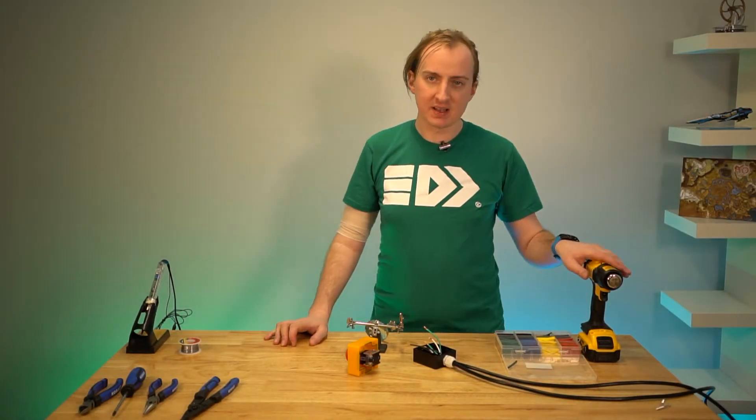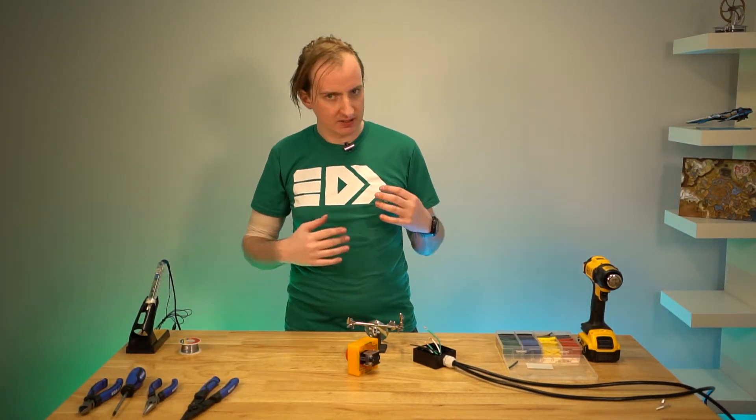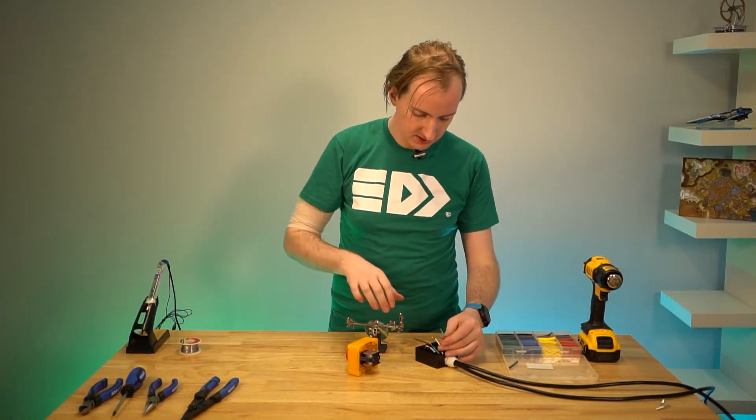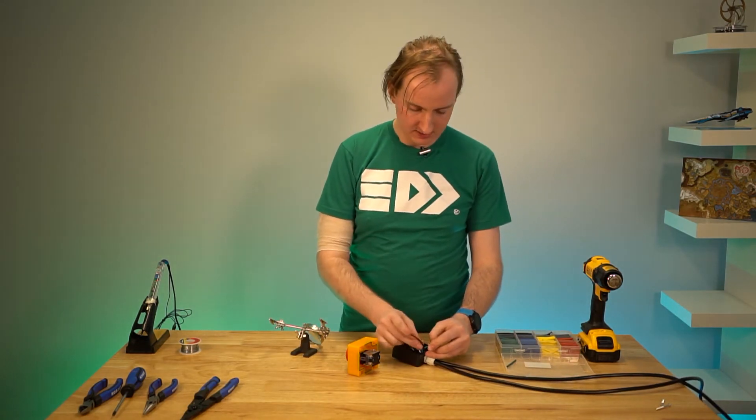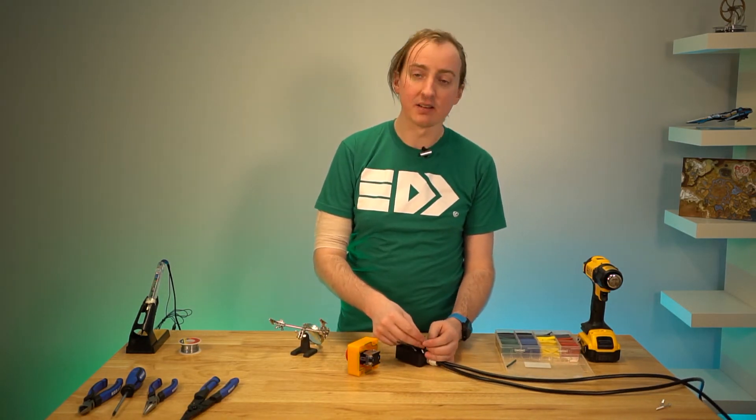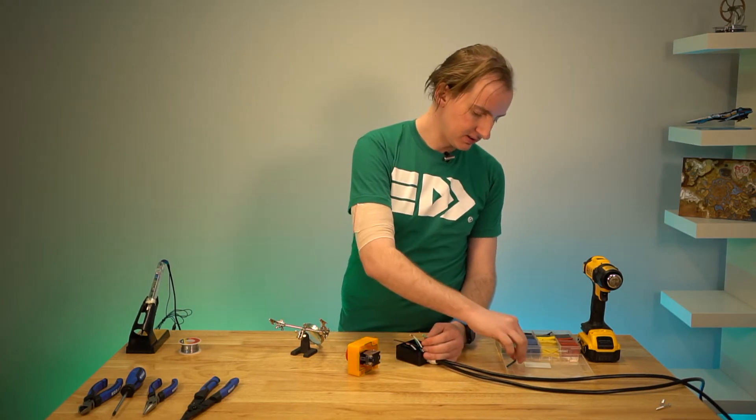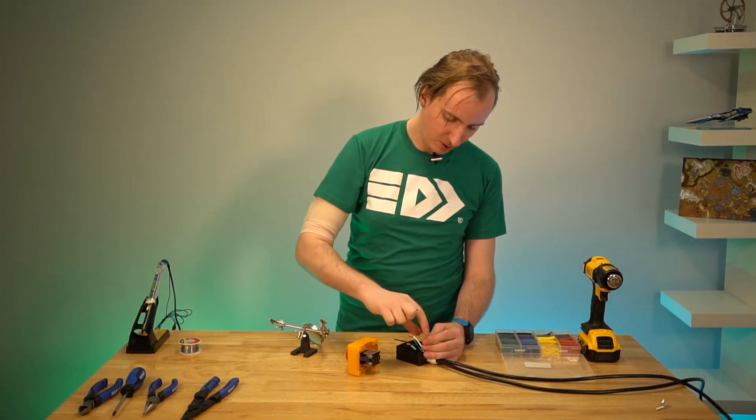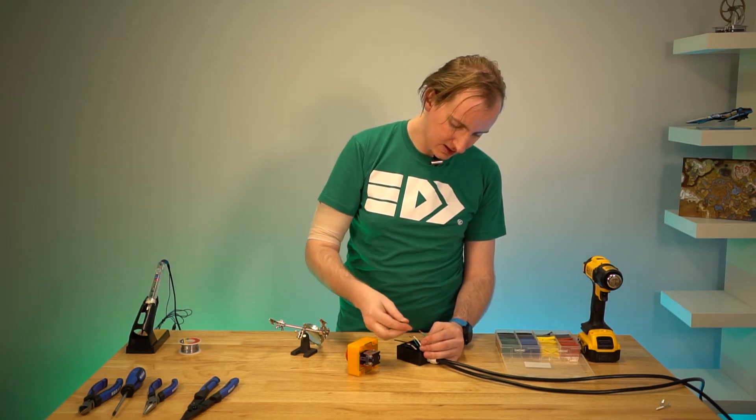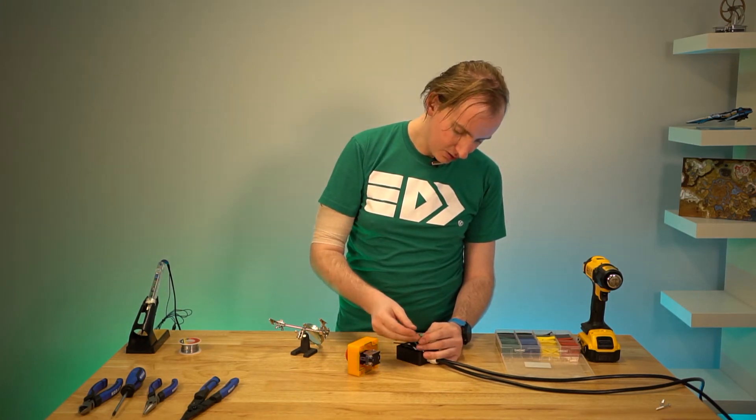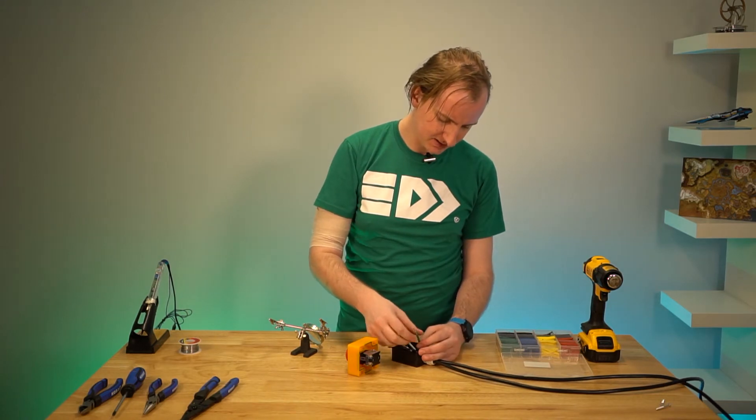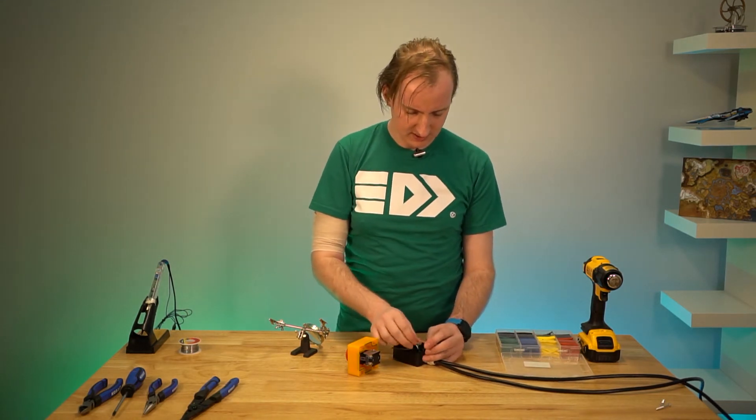All right, got my heat gun, got my heat shrink, got my soldering iron. Let's get these wires done. So, I'm going to start with the grounds here, which is the green. I'm going to take these two wires. And again, there are good ways to do a wire splice. This is not one of those. I'm going to take a little bit of heat shrink, pop it over the end of the wire.